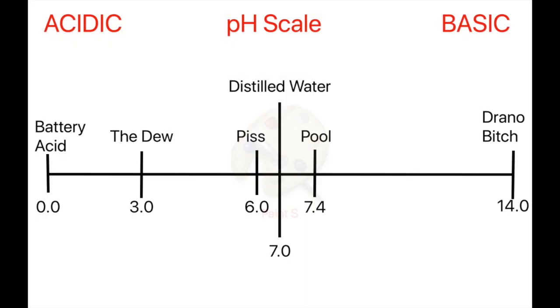Before we get started, let's talk about how pH is measured. Thanks to Soren Sorenson back in 1909, we've got a way to quantify how acidic or how alkaline a substance is. The pH scale ranges from 0 to 14, with 7 being right down the middle. The scale is used to measure how acidic or how basic water is.